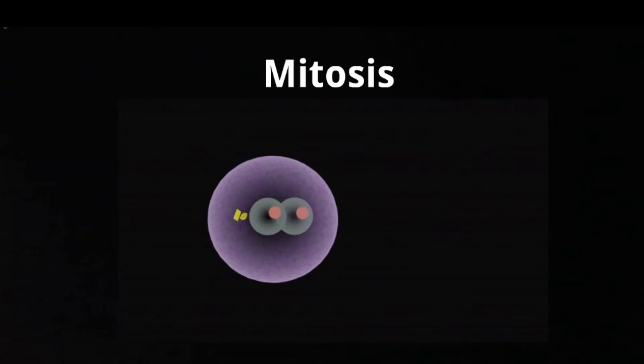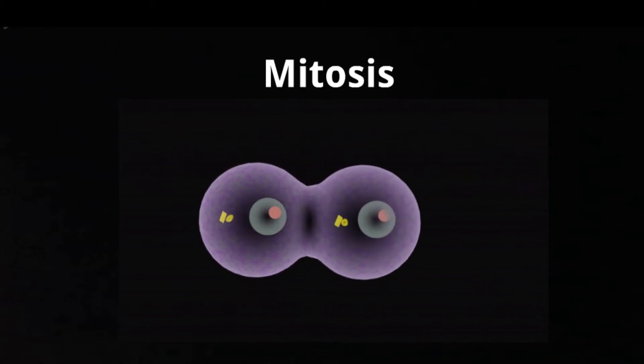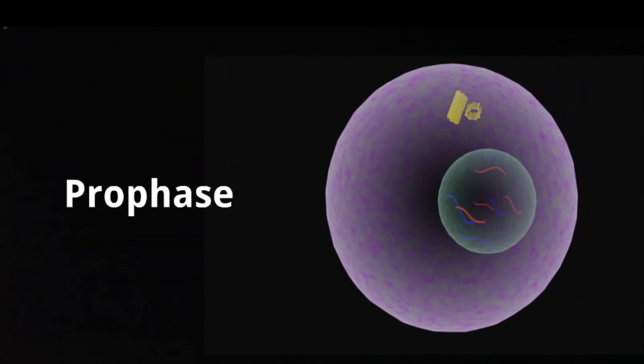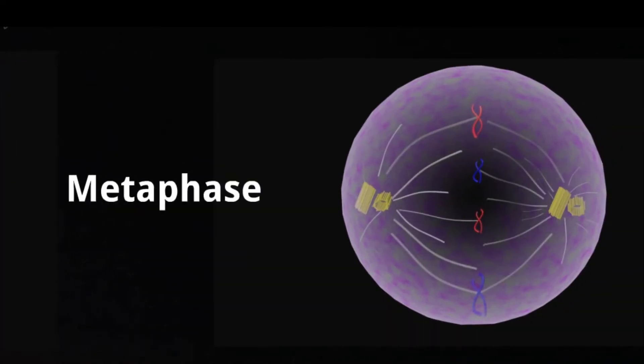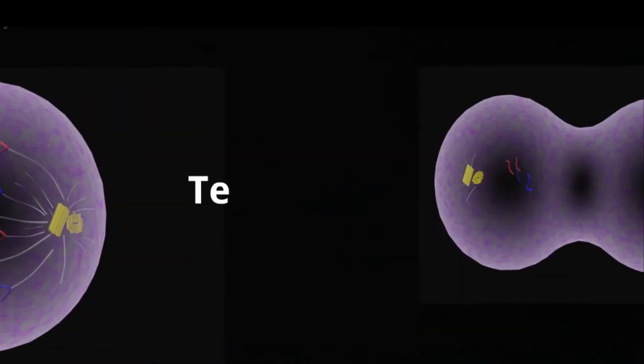The processes occurring during mitosis have been divided into different stages: Prophase, Metaphase, Anaphase, and Telophase.